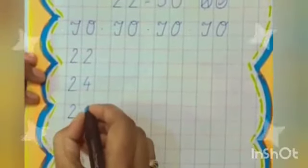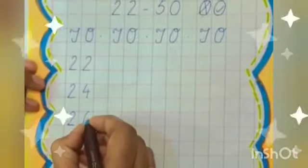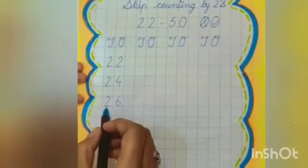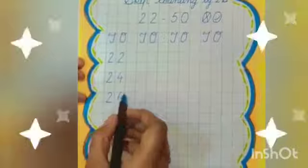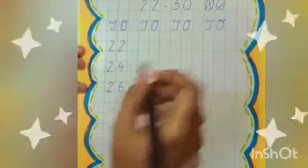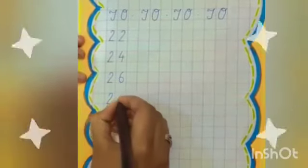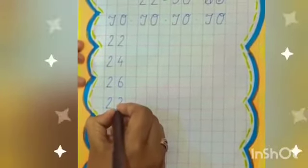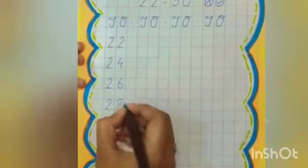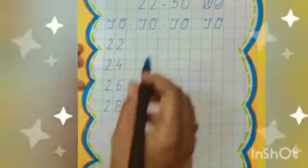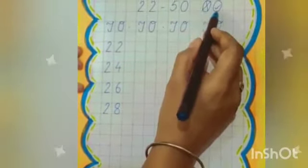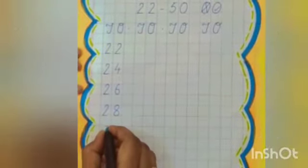In this counting we will skip one number every time. 26, 27, 28. So we will write 28. Next is 29, 30. So we will write 30.